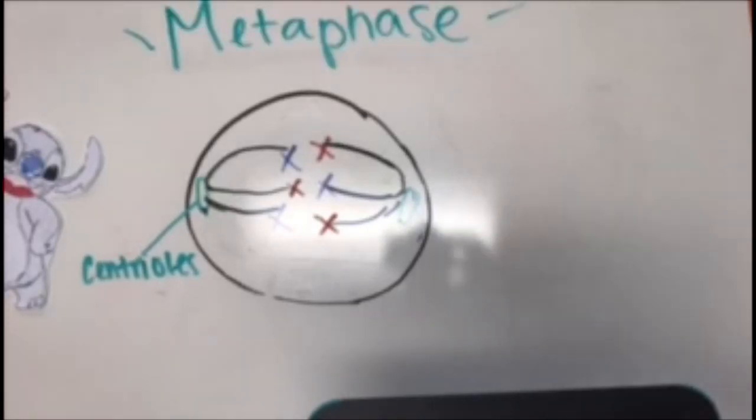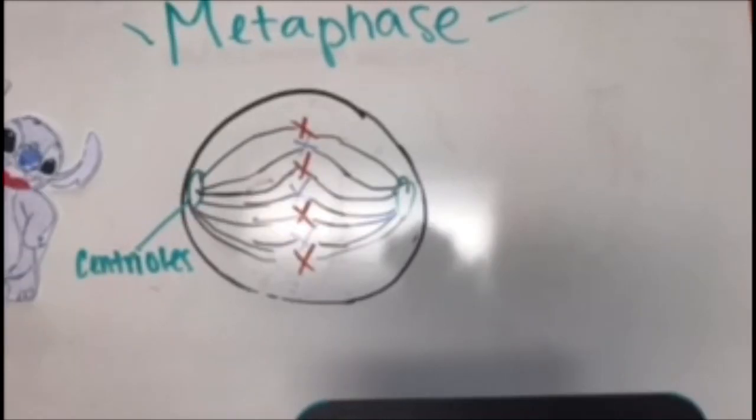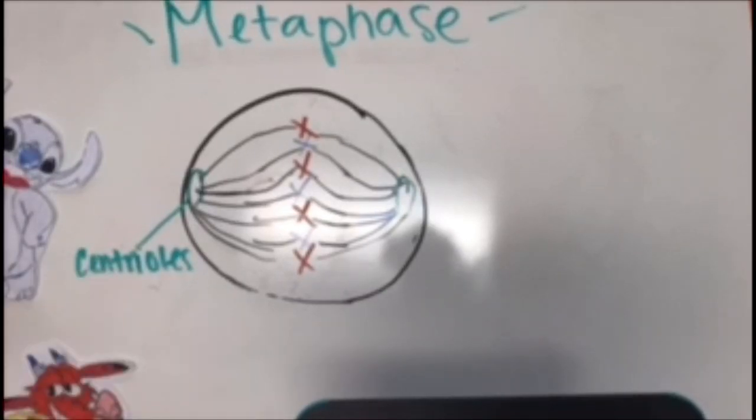The next phase following prophase is metaphase. In metaphase, the nuclear envelope has disappeared and the spindle fibers have captured all the chromosomes and lined them up at the middle of the cell, ready to divide. All the chromosomes then align at the metaphase plate. Don't worry guys, it's not actually a plate. Yeah, it's not like a dinner plate, that's just what it's called.